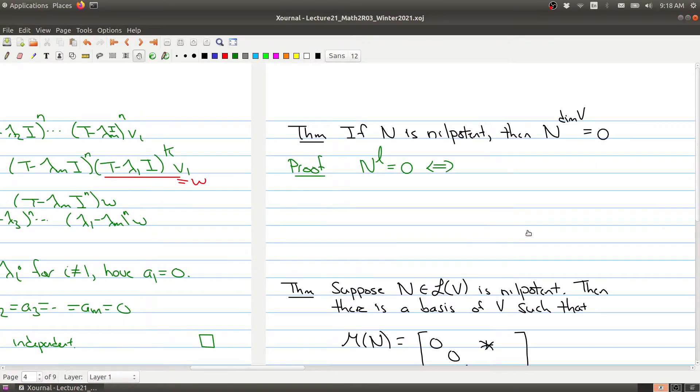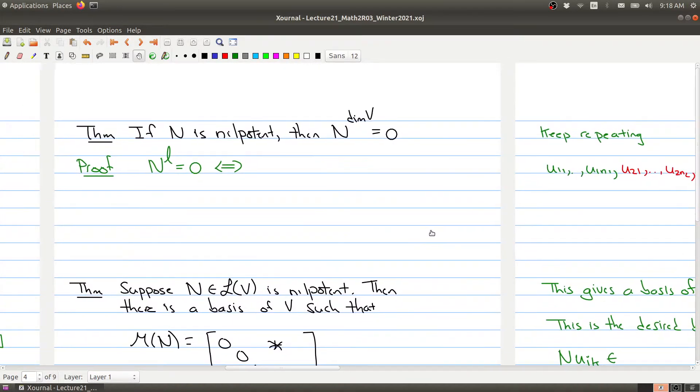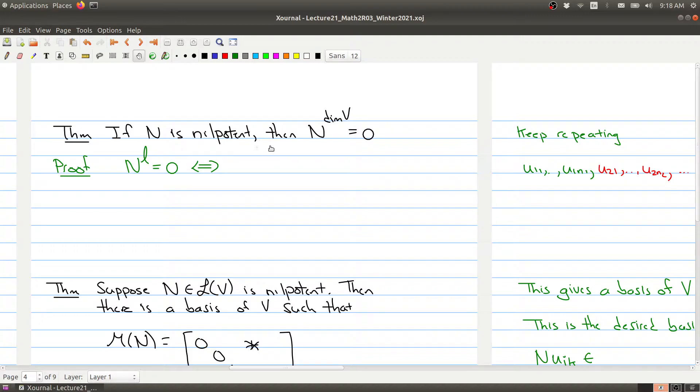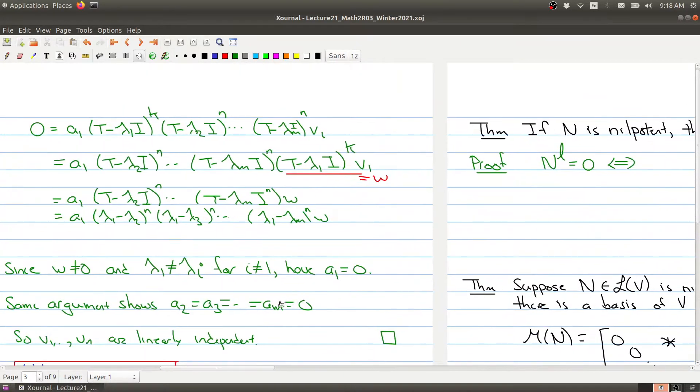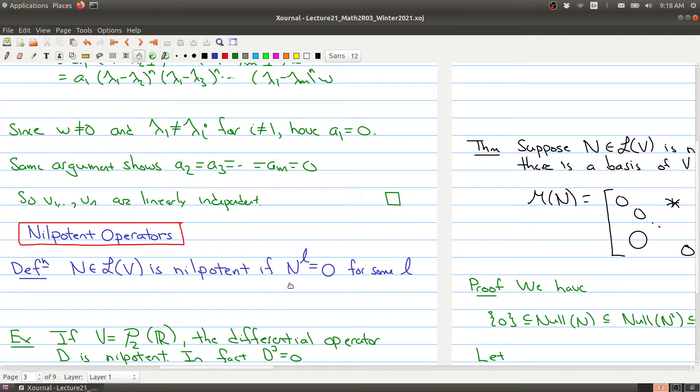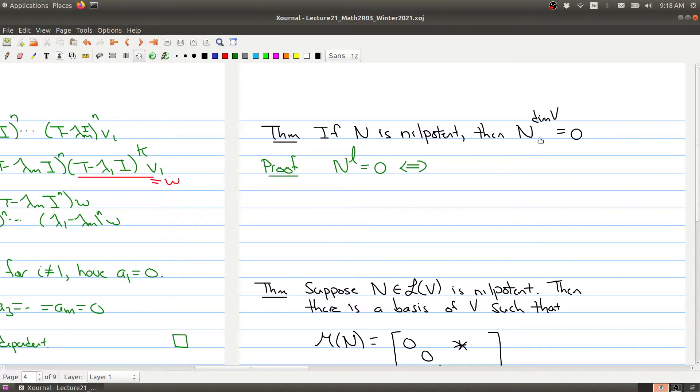One nice thing is we know that if N is nilpotent, then N raised to the power of the dimension of V is equal to 0. If we go back to the definition, it just says that some power of N gives you the zero operator. It gives you no indication about L. But as the next theorem says, when you get at least to the dimension of V, then it will actually be equal to 0.